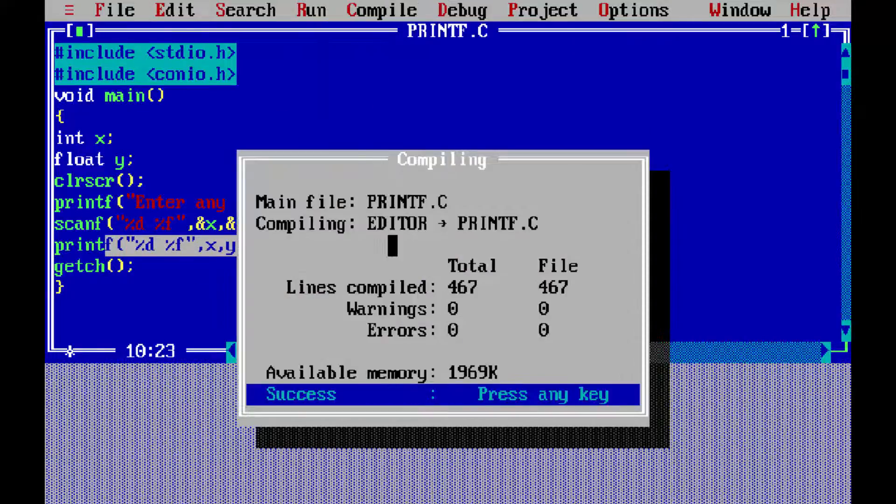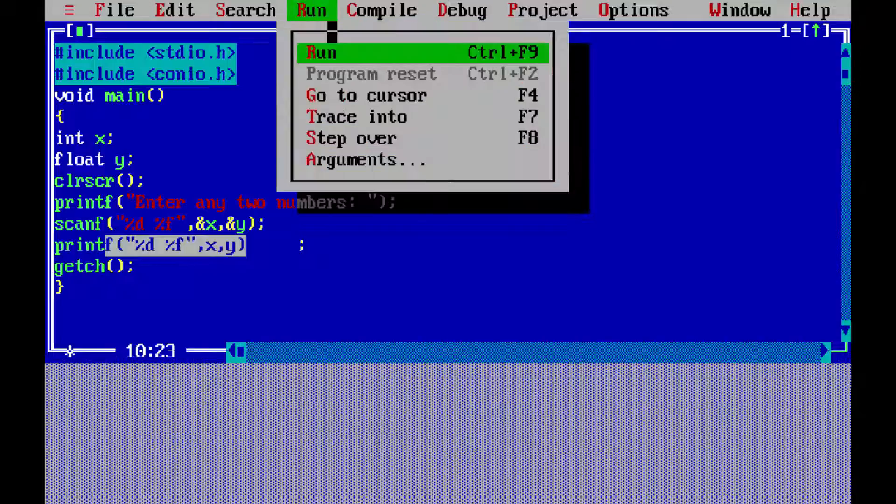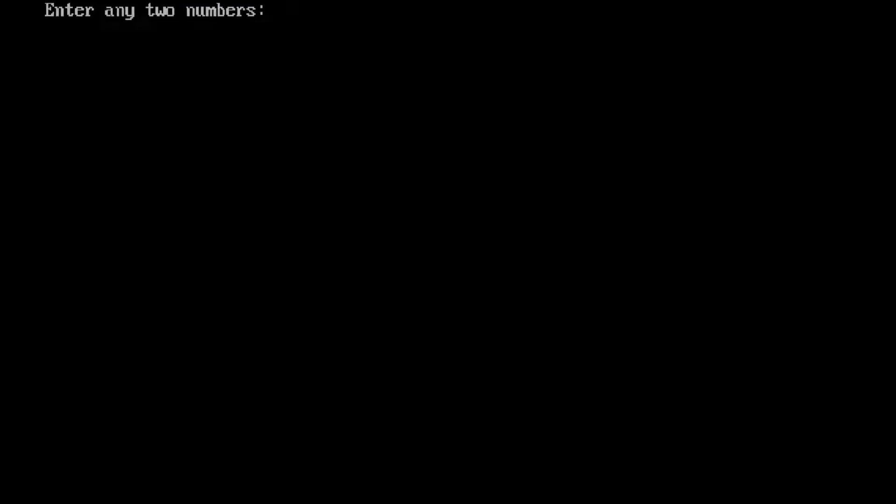If I start compiling it and run the program, you are able to see enter any two numbers. I am giving two as integer, three point five as float value. You are able to see it is printed.